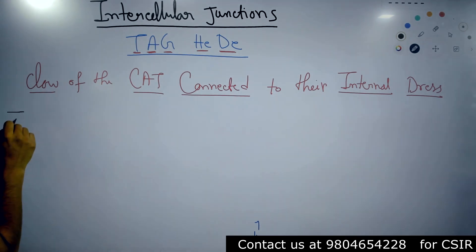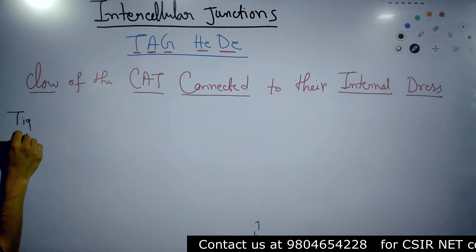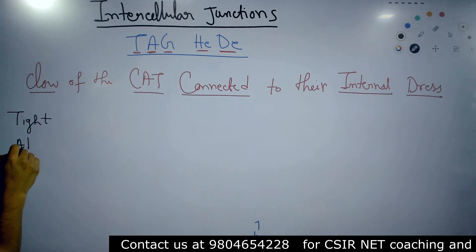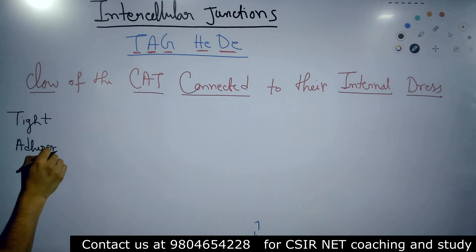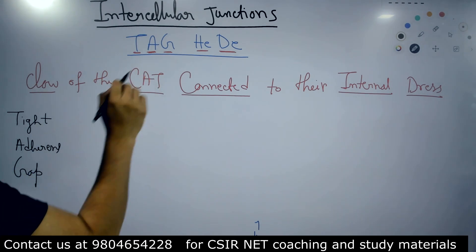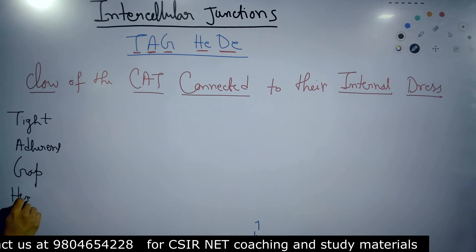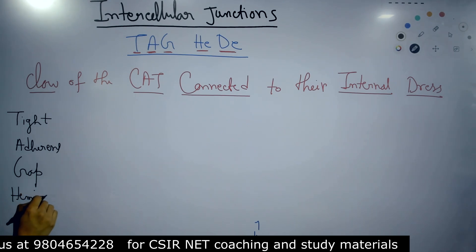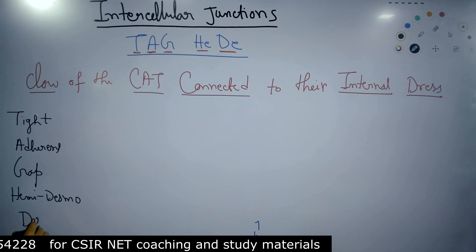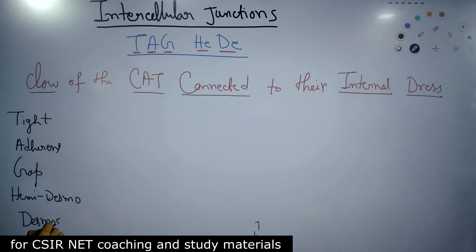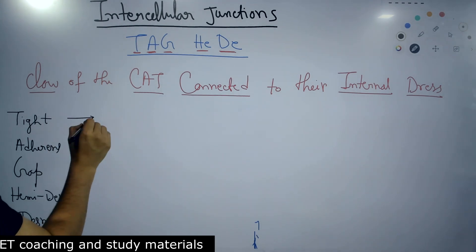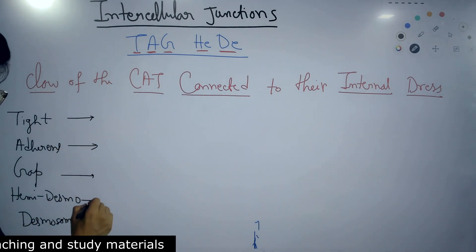Starting with T for tight junction, then A for adherence junctions, G for gap junction, HE for hemi-desmosome, and D for desmosome. Now I'll put the names of the proteins next to each one.